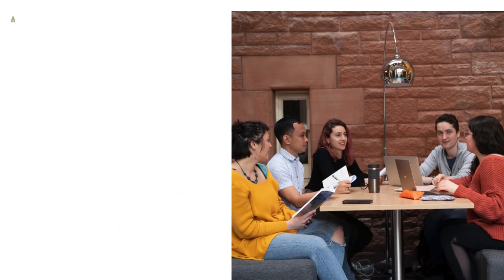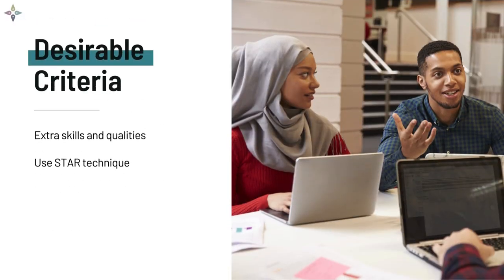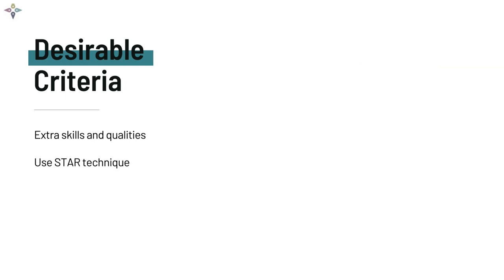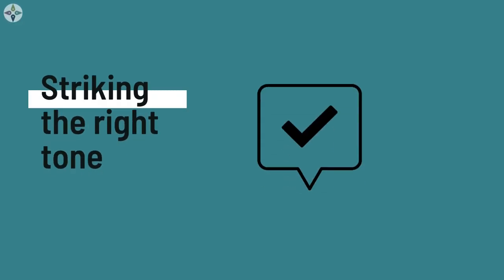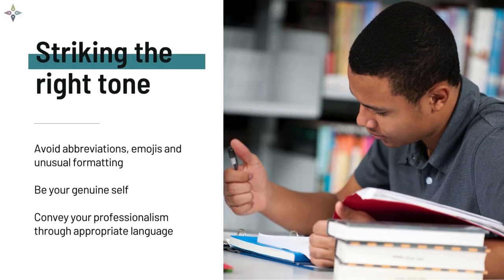This will ensure your answers are well structured and provide all the information that is required. When providing evidence, this should be framed in a personal way — we want to know the situation that you were faced with, what role you played, the action you personally took, and the outcome. The desirable criteria are used to highlight extra skills and qualities we are looking for in a candidate. It is important to try to provide evidence against these too using the STAR technique. If you do not possess the desirable skills, it's worth saying that you're keen to learn rather than leaving it blank.